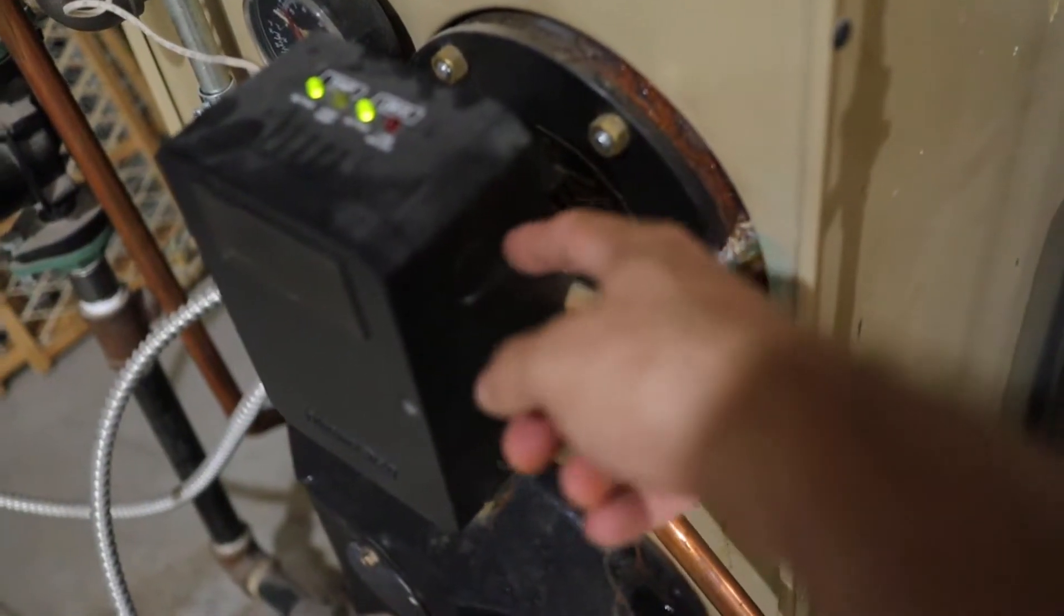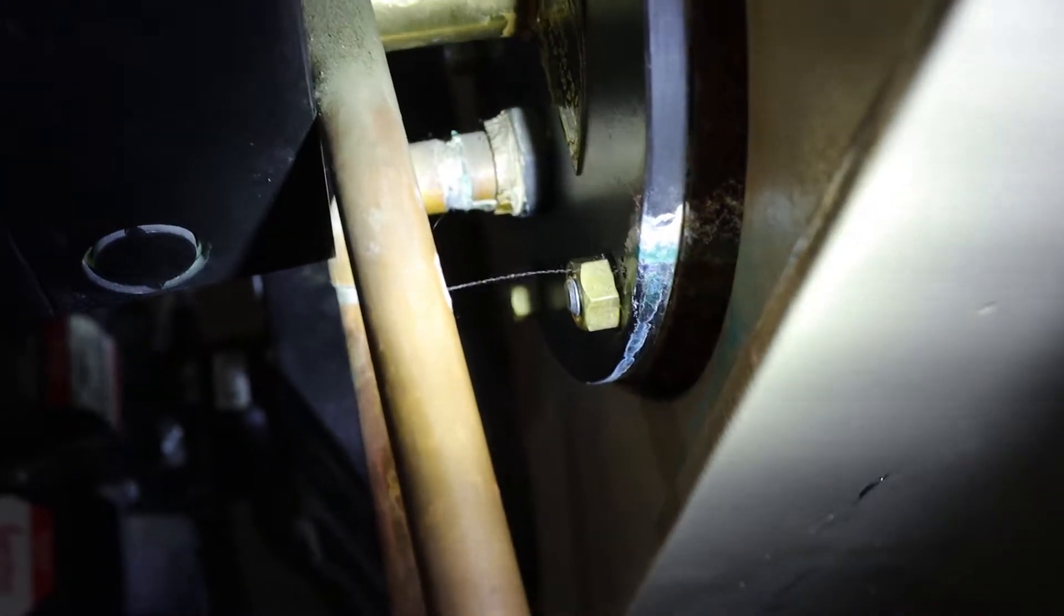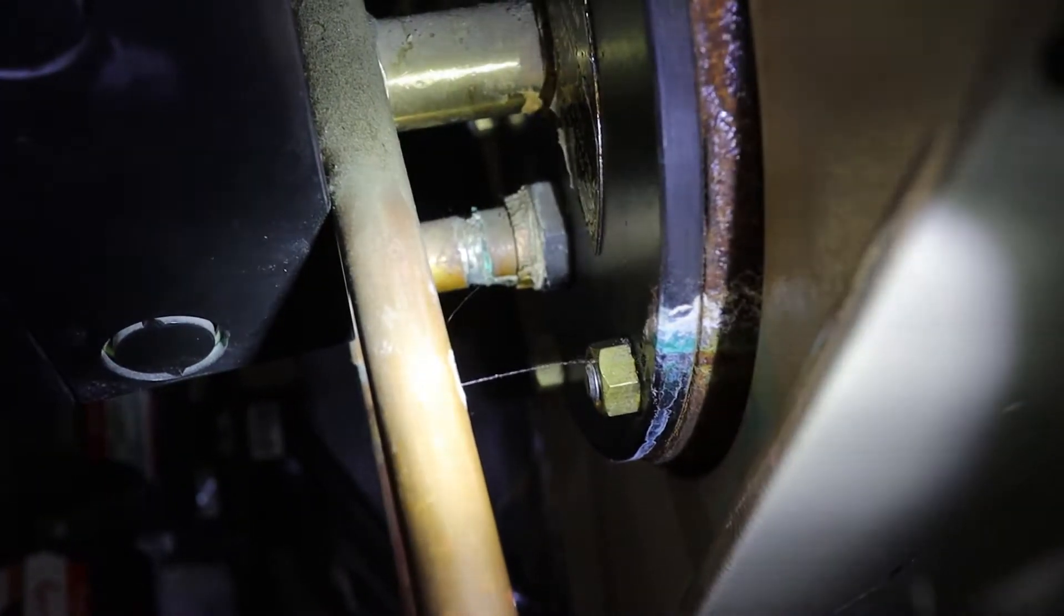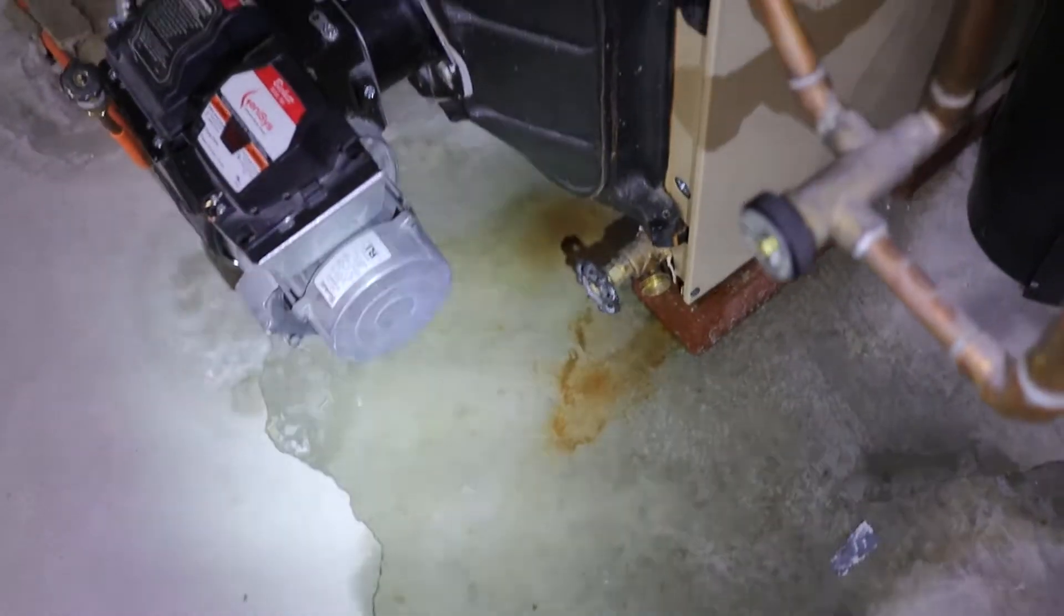Now the leak itself is back here on this section of pipe that goes right into the furnace. Hopefully you can see it there. The pipe has a pinhole in it right on the back here right by my furnace and is spraying onto the furnace body and then leaking down here onto the floor.